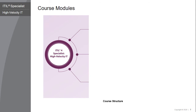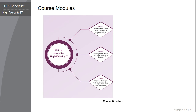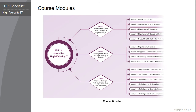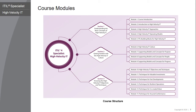The ITIL4 Specialist High Velocity IT is categorized into three primary sections: first, understanding the basic concepts of high-velocity IT; second, getting familiar with the high-velocity IT culture; and third, knowing the high-velocity IT objectives and techniques. The various modules of the course contribute to one of these sections. You can also access the course structure from additional documents.